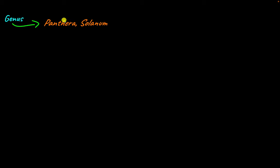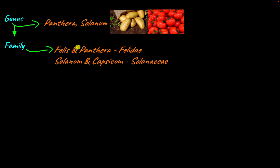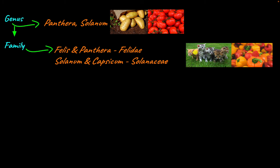A family is made up of closely related genera, which is the plural form of genus. Along with Panthera, there is another genus Felis, and both are classified under the family Felidae. Felis includes common domestic cats. For plants, the genus Capsicum along with the genus Solanum is classified under the family Solanaceae — which is a very large family.